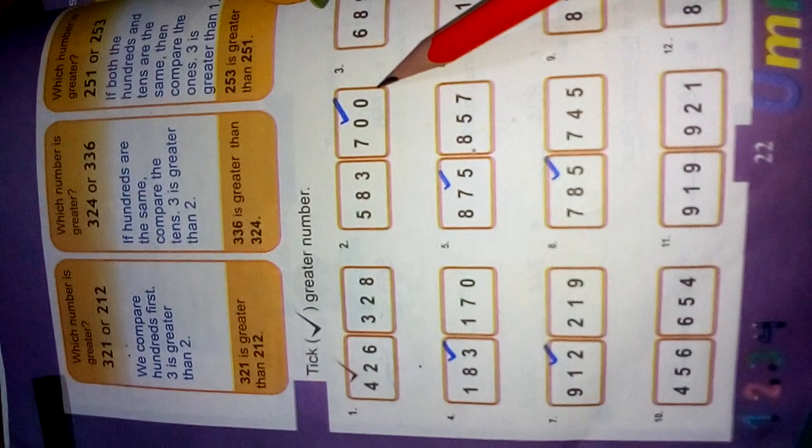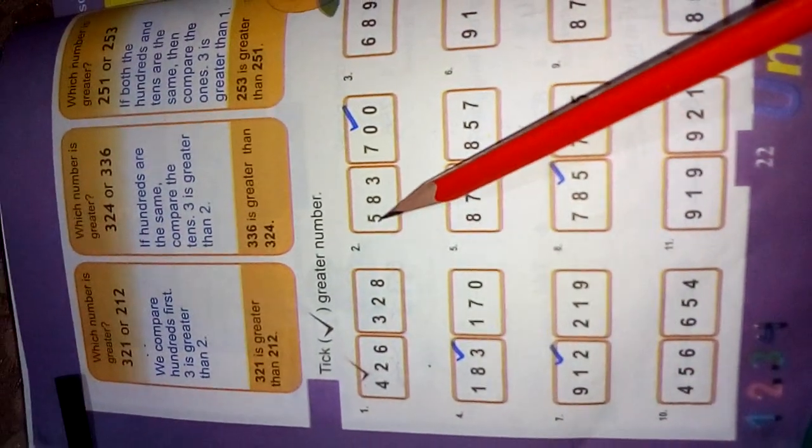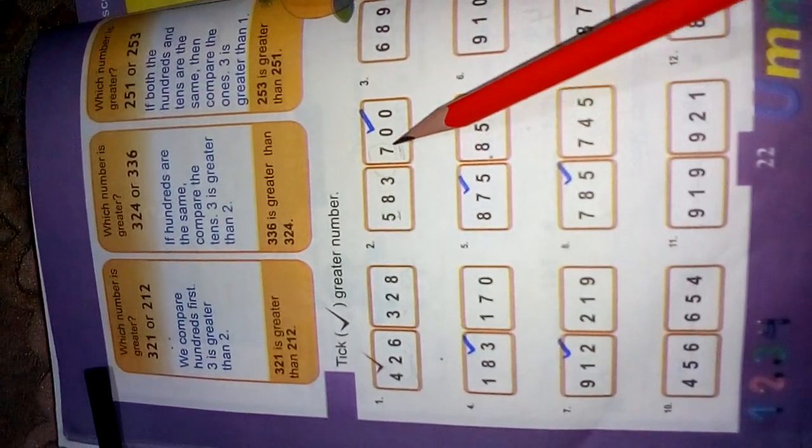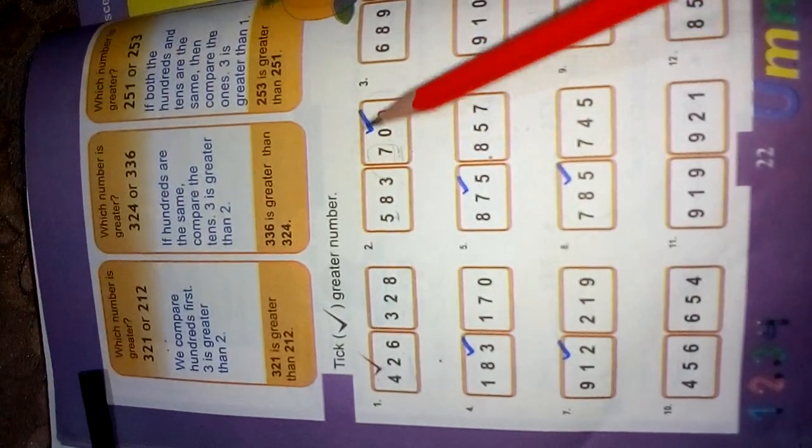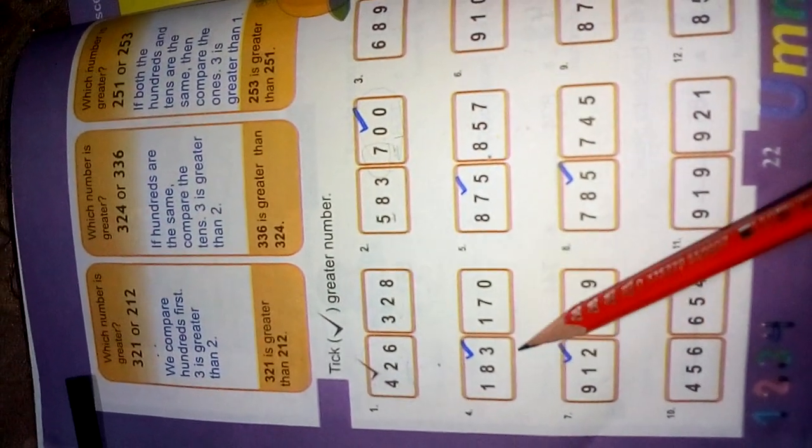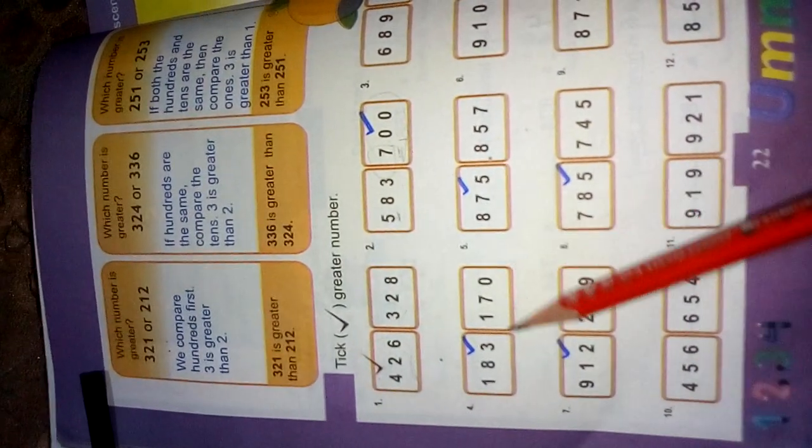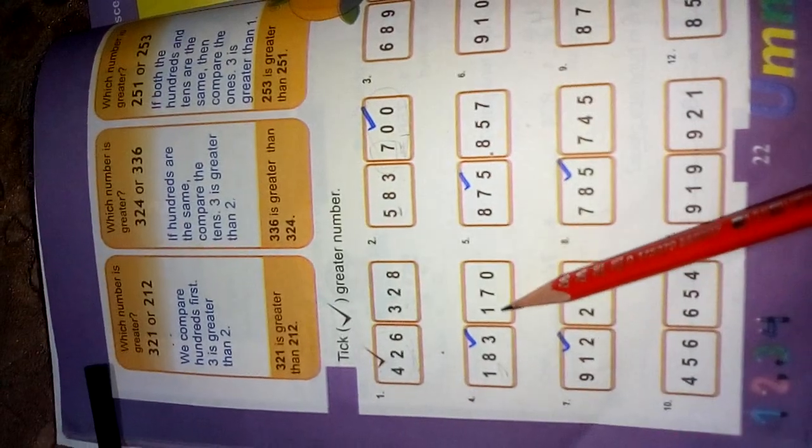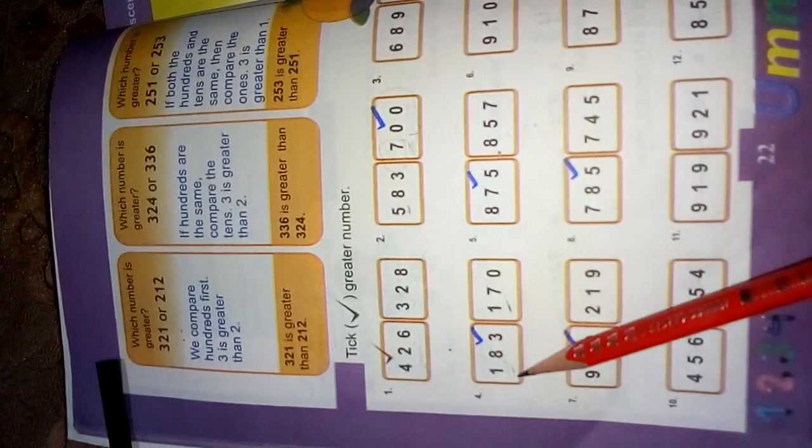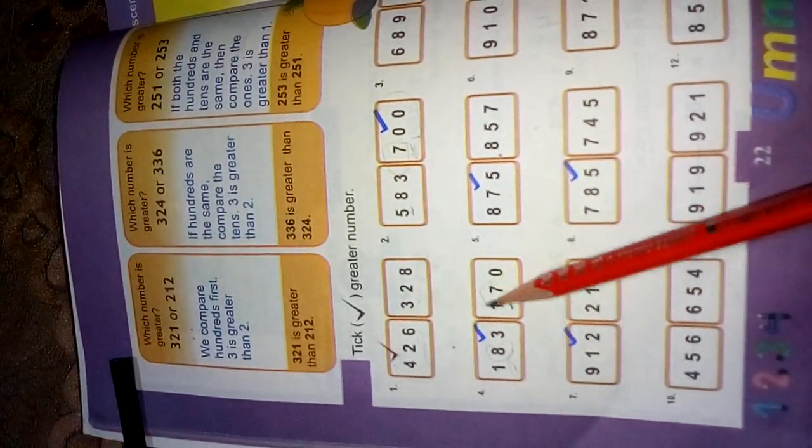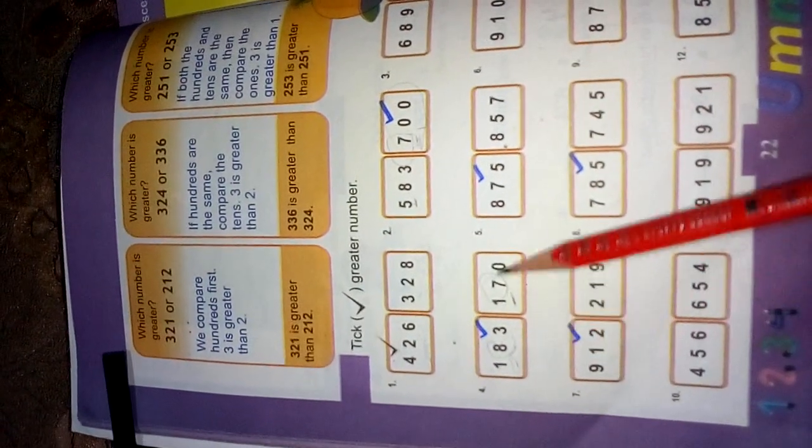Question number two: 583 and 700. Comparison from the hundreds place value: 5 and 7. Which one is greater? 7 is greater in counting, so the greater number is 700. Question number four: 183 and 170. Compare the hundreds place value. In the hundreds place, here is 1 and here is also 1. We jump to the next digit. Here is 8 and here is 7. Compare 8 and 7. 8 is greater. It means 183 is greater.